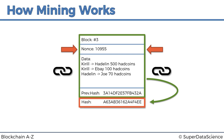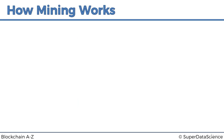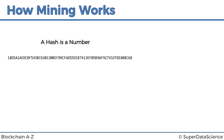How does this tie in with mining? The first thing we need to do is make a statement: a hash is a number. Here is an example of a hash - a proper SHA-256 hash. It takes up 64 digits, 256 bits. This is actually a number - not just a word, not just a combination of characters, not just a label. It's an actual number, so you can increment it and do mathematical operations with it.